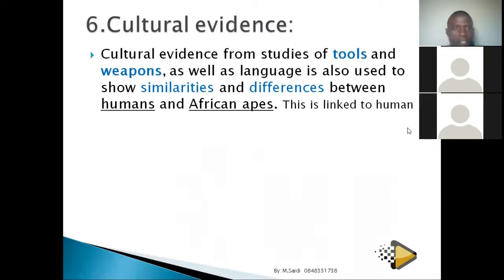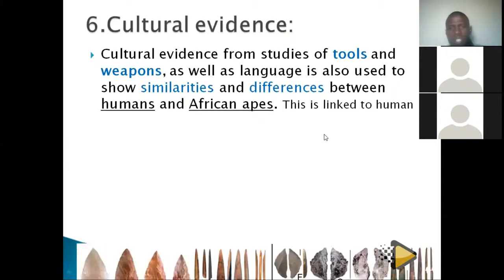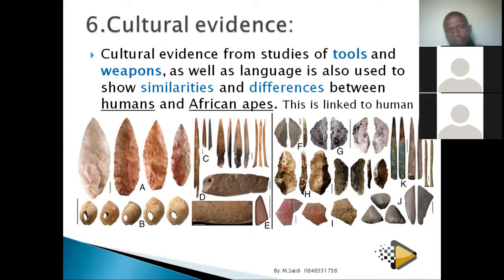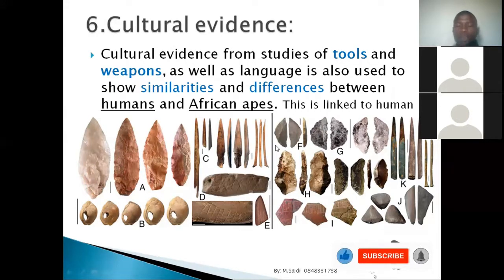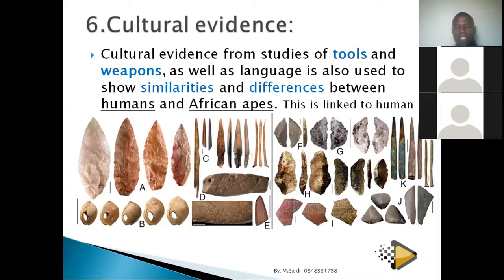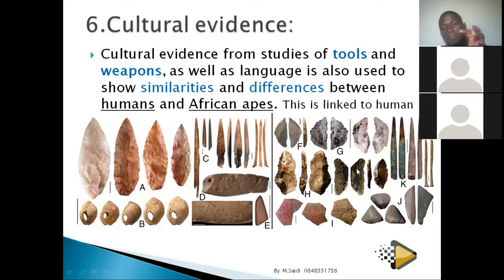The final evidence is cultural evidence, which is linked to humans and shows how early humans used tools. In human evolution we have different stages — Homo habilis, meaning 'handyman,' were people who used tools and fire. If such tools are found in South Africa, we can calculate how many years ago those humans existed. By linking these findings, we can see that evolution took place — humans evolved from earlier forms into the more advanced Homo sapiens.